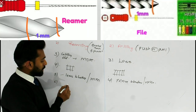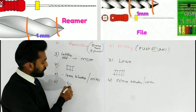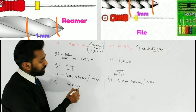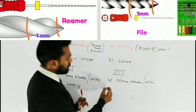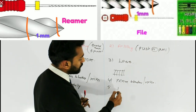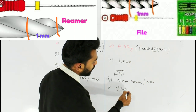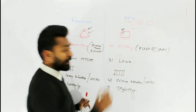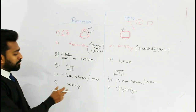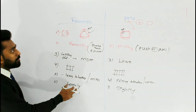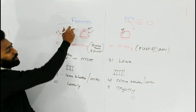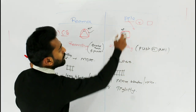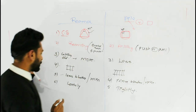In simple words, blades are loosely packed in the case of a reamer, whereas blades are tightly packed in the case of a file.